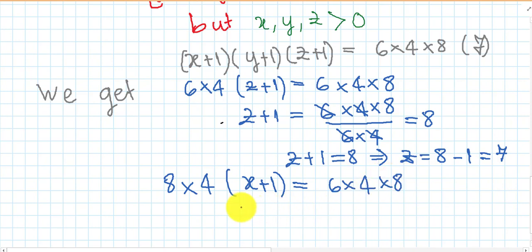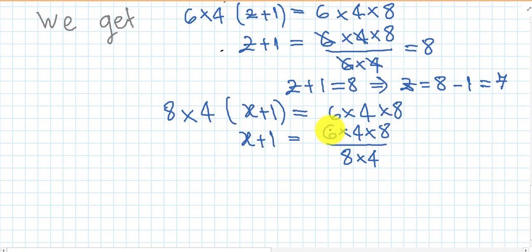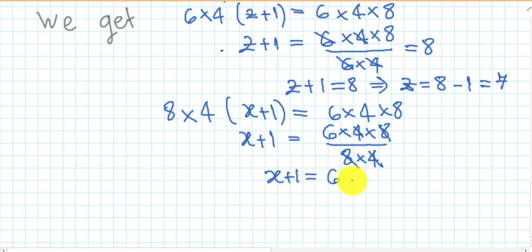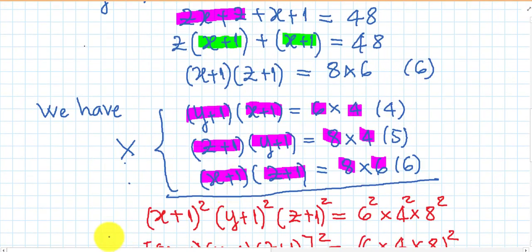Similarly, we can write x plus 1 equals 6 times 4 times 8 over 8 times 4. Simplifying: 4 cancels with 4, and 8 cancels with 8. We get x plus 1 equals 6, so x equals 6 minus 1 equals 5.